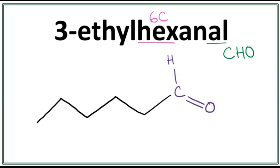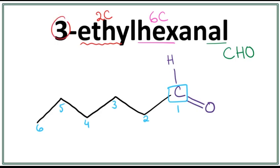Let's number these carbons. Remember that the carbon in the functional group is always the first carbon. Second carbon, third carbon, fourth carbon, fifth carbon, and the sixth carbon. Now there is an ethyl here, which means that there are two carbons in the side chain, and the ethyl is attached on the third carbon right here.